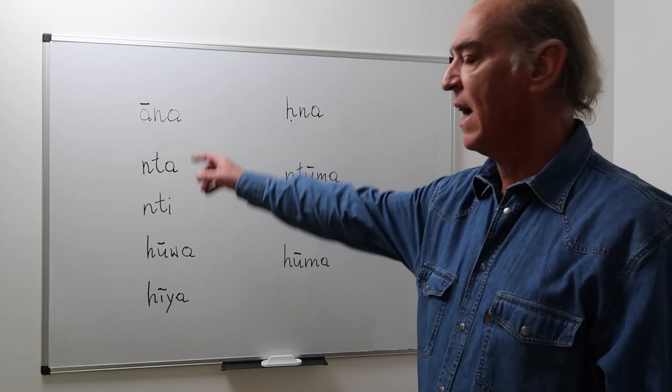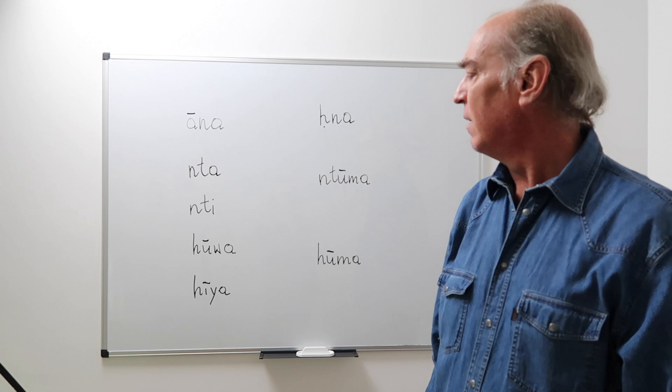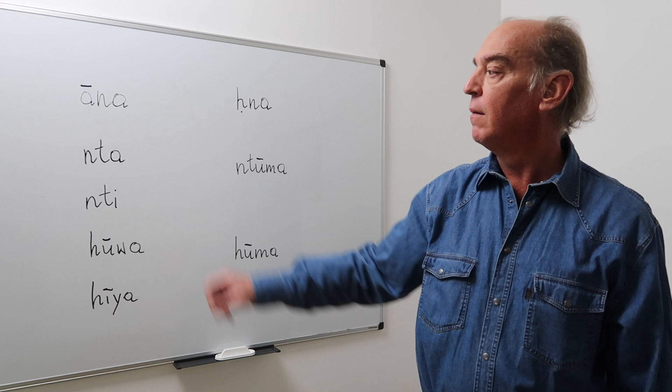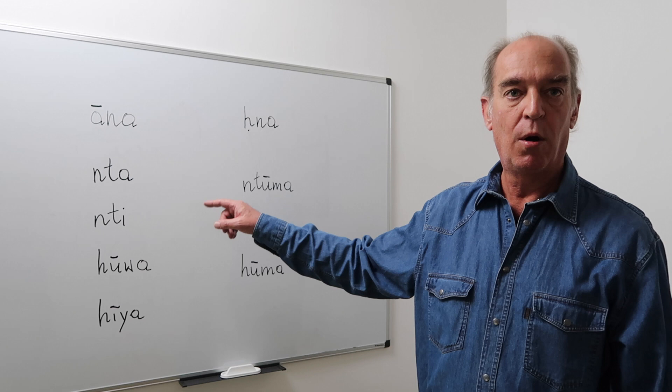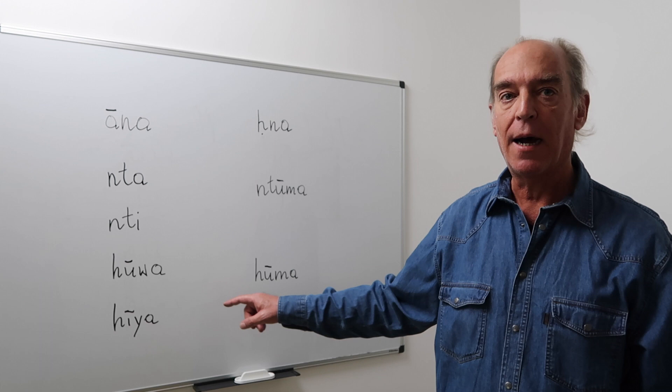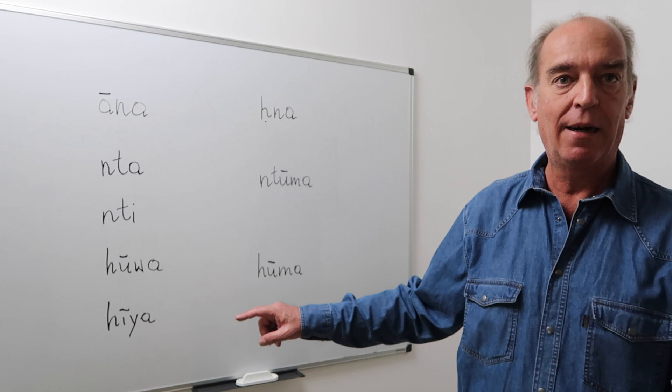We begin with Anna. Anna stands for I. Then we have two forms, Nta and Nti. Nta is 'you' when talking to a man, while Nti is for talking to a woman. In third person, we have a 'he' form which is Huwa, a 'she' form which is Hiya. There is no 'it' form — when you have to say 'it' in English, you say Huwa in Moroccan Arabic.